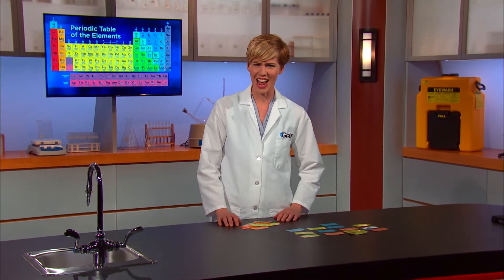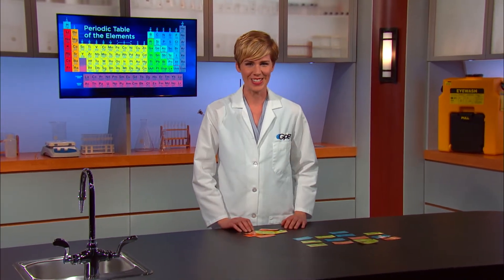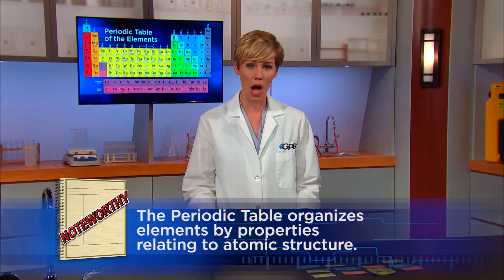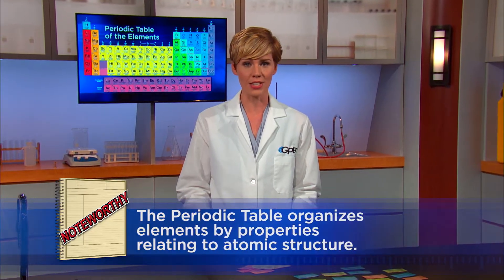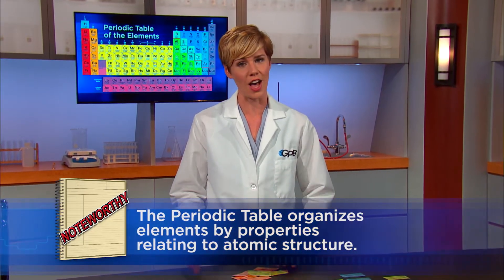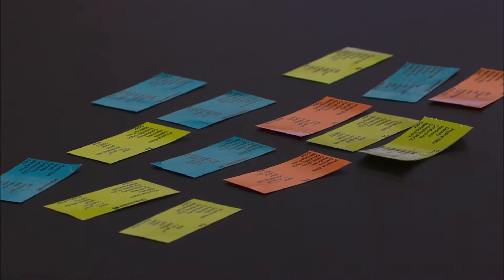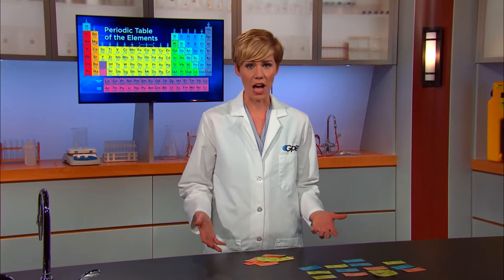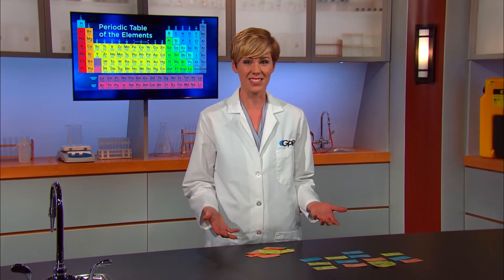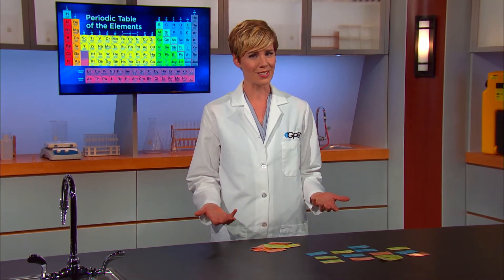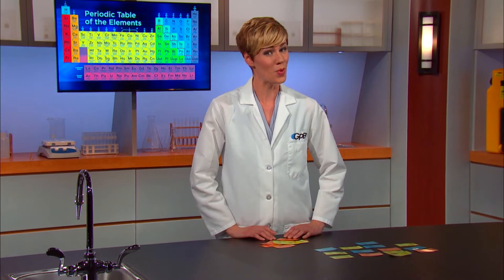Our teacher wasn't kidding. This can be challenging, but I'll figure it out. The important thing to take away from this is that the periodic table organizes the different elements based on properties, and these properties relate to the structure of the different atoms themselves. You can also use these properties to predict element behavior. Dmitri Mendeleev did that when he organized his periodic table — he listed properties of elements that scientists didn't even know existed, which is pretty amazing. So let's get back to our classroom to learn a little more.